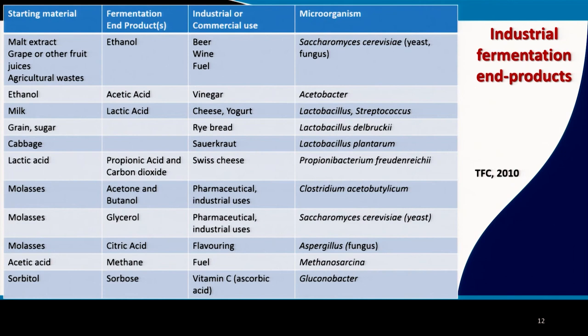Agricultural waste can be converted to fuel — biodiesel production has become very popular, especially in India, Brazil, and the US — and these reactions are mediated by yeast or fungi. When the starting material is ethanol, it can be converted to acetic acid, which is what we call vinegar, sold commercially as vinegar. The microorganism responsible is Acetobacter.